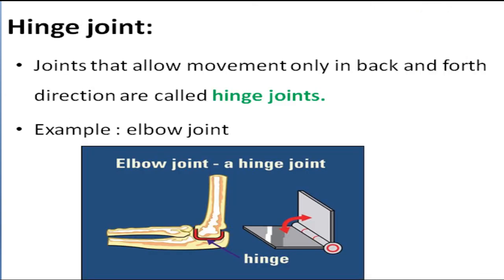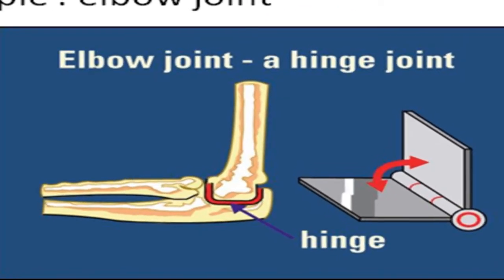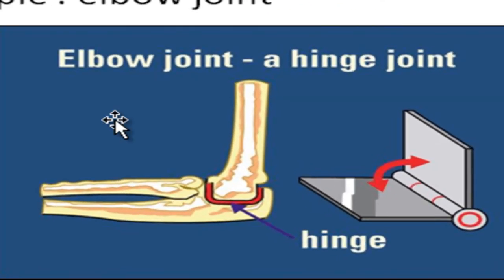Our next keyword is hinge joint. Joints that allow movement only in the back and forth direction are called hinge joints. For example, the elbow joint is a hinge joint because it moves only in two directions — back and forth.